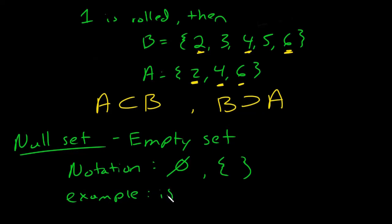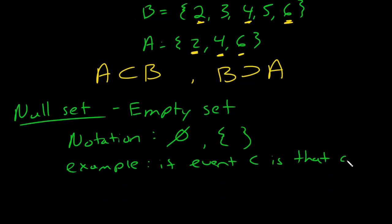An example of a null set, say if event C is that a number more than 6 is rolled. If a number more than 6 is rolled, then C would be the empty set. There's nothing, because basically you can't roll a number more than 6, so C then would just be the empty set.